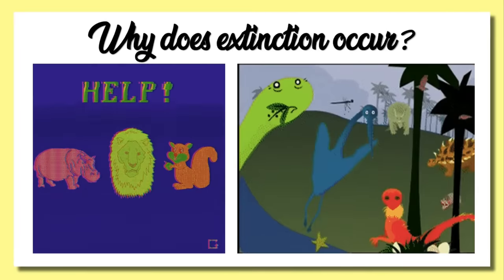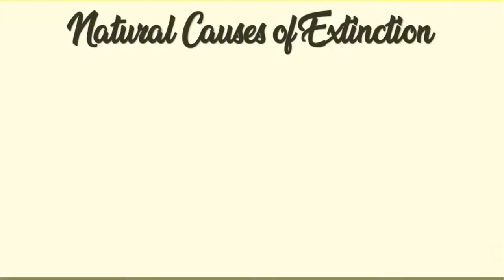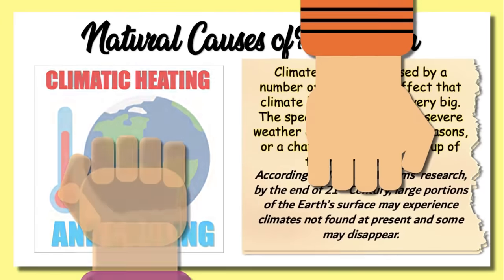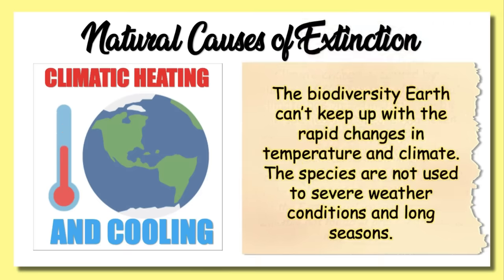The question is, why does extinction occur? Here are some of the natural causes. The first one is climatic heating and cooling. Climate change is caused by a number of things, and its effect on extinction is very significant. The biodiverse Earth cannot keep up with rapid changes in temperature and climate. Species are not used to severe weather conditions, long seasons, or a changing chemical makeup of their surroundings. As more species die, it becomes more difficult for survivors to find food. Warmer climates also create perfect conditions for diseases and epidemics to thrive.